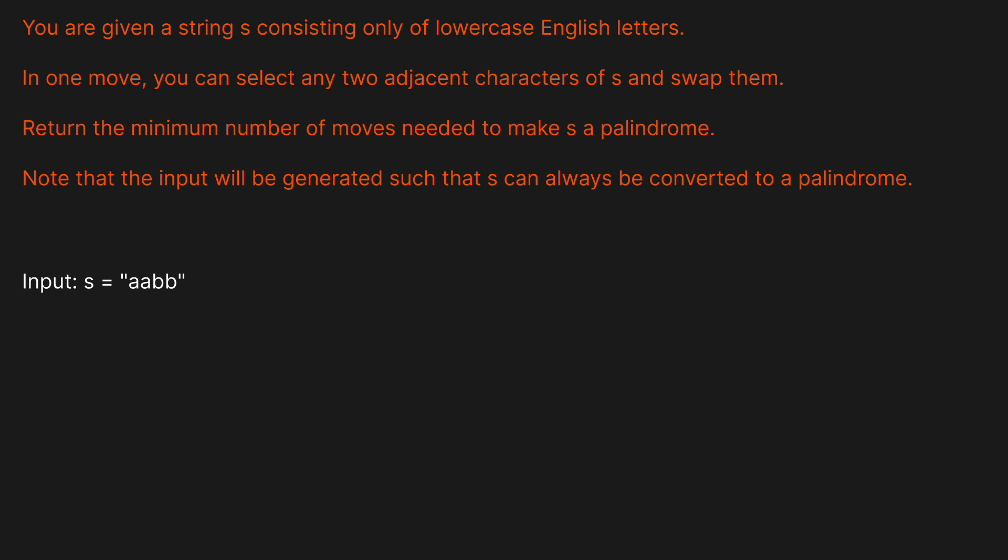You are given a string S consisting of lowercase English letters. In one move, you can select any two adjacent characters of S and swap them. Return the minimum number of moves needed to make S a palindrome. Note that the input will be generated such that there always can be a palindrome made from S.